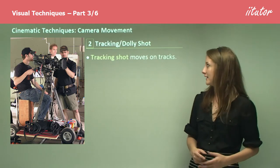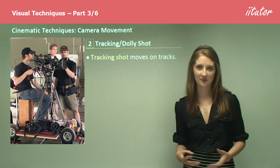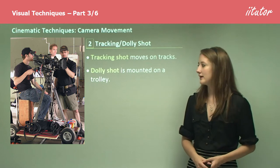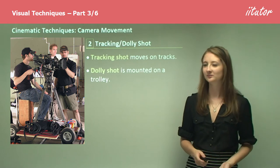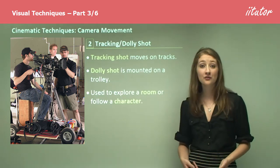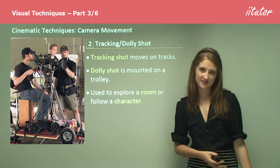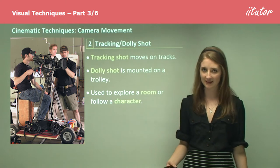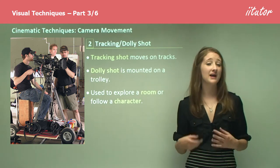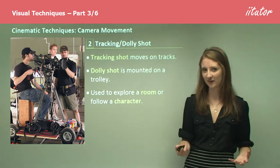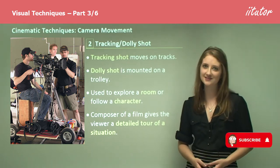We then get the tracking or dolly shot. The tracking shot moves on tracks — that's why it's called the tracking shot — and the dolly shot is mounted on a trolley. These are similar techniques, though not quite the same. They are used to explore a room, follow a character through a corridor, or show people's movements. The camera follows the character, suggesting action, interaction, and dialogue, giving the viewer a detailed tour of a situation.